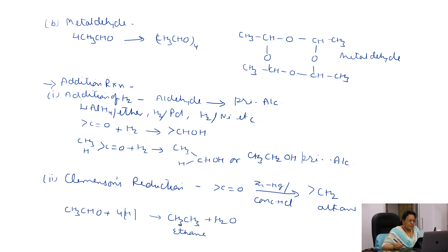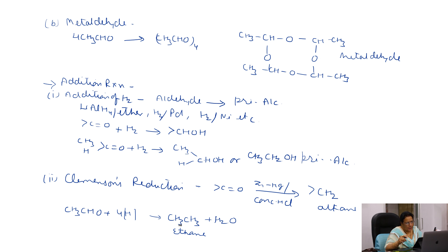The next polymer is metaldehyde. When four molecules of acetaldehyde polymerize, metaldehyde is formed. This reaction is carried out in the presence of HCl.